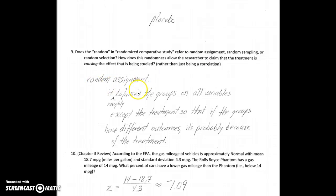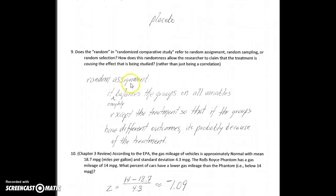The whole purpose of random assignment is that it balances the groups. If we think in terms of race, math ability, height, or anything that could potentially be a lurking variable, the randomization is going to roughly balance the groups on all those variables — except for one. The treatment is going to be different: one group gets the treatment entirely, the other does not. So if we see a difference in the end, we know it's probably not because of math ability, race, or socioeconomic status, because the groups are balanced on all of those. The only thing they're not balanced on is whether or not they got the treatment, so if we see a difference in outcome, it's probably because of the treatment — or potentially random chance, which we'll discuss in the second half of the course.